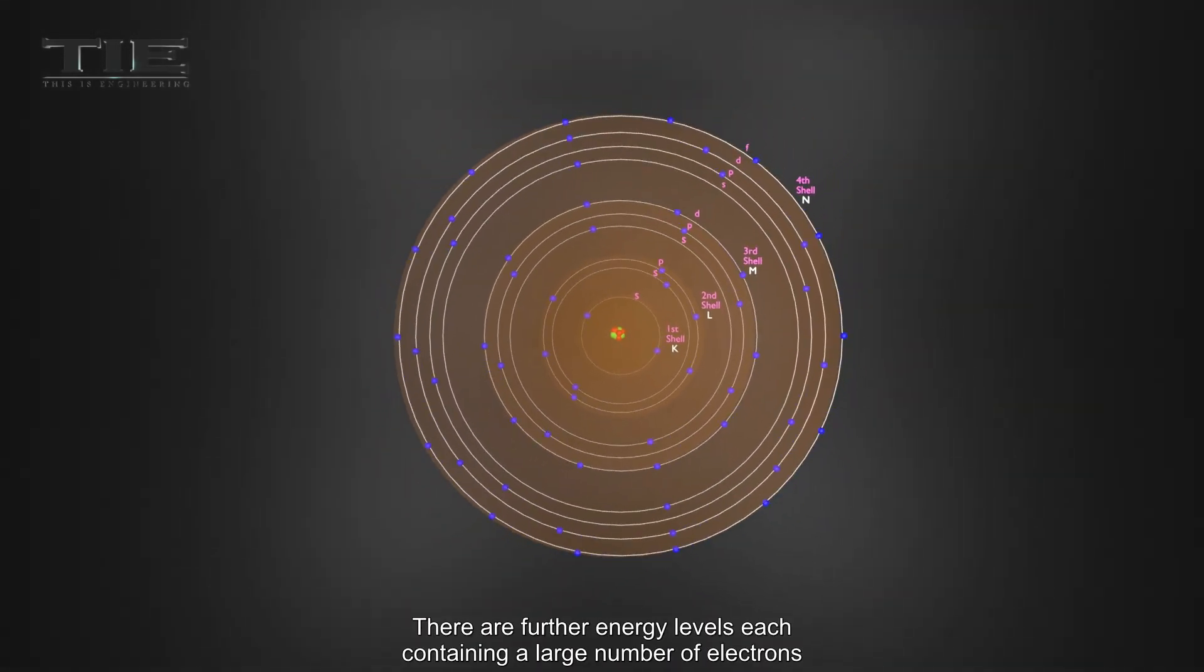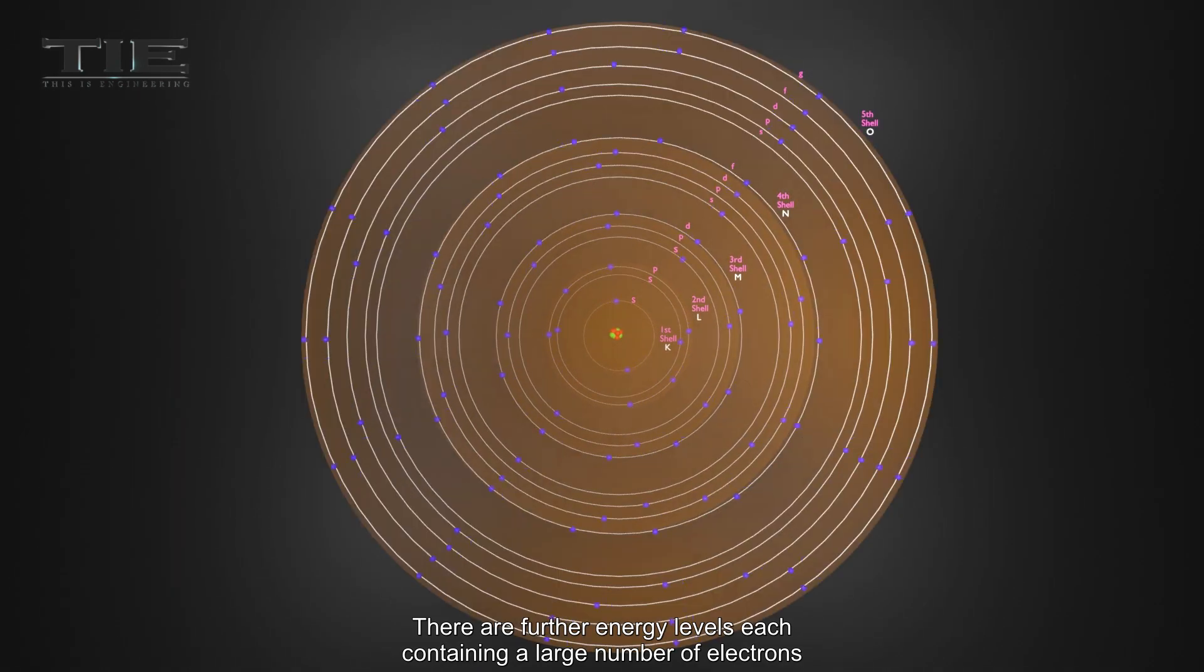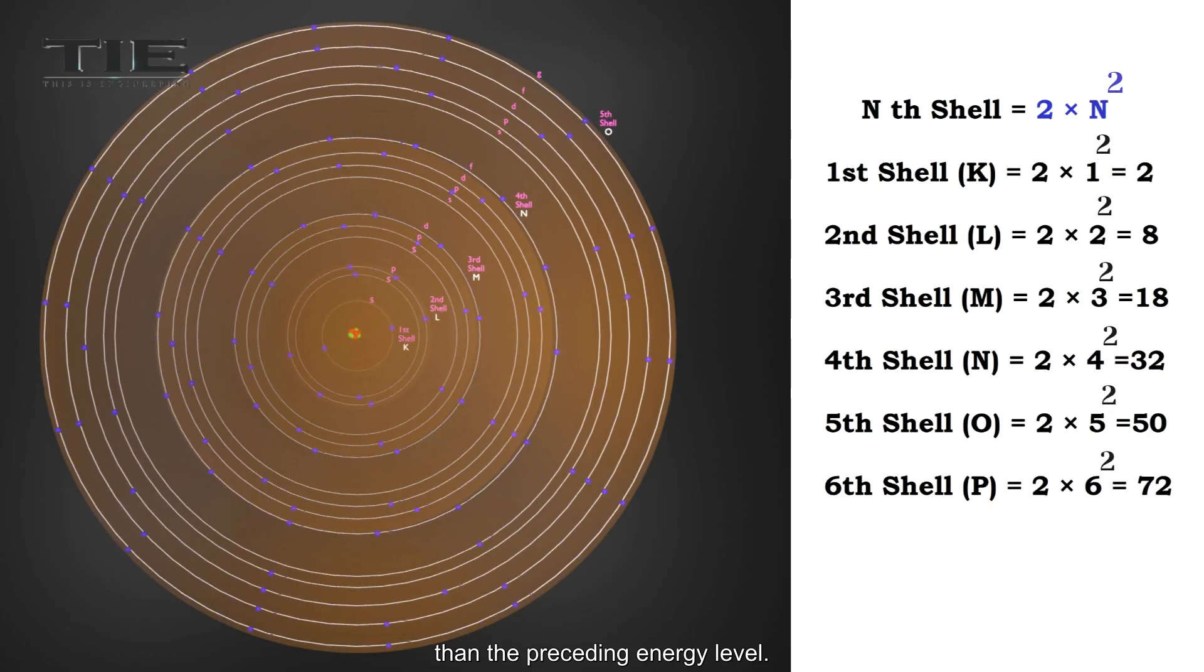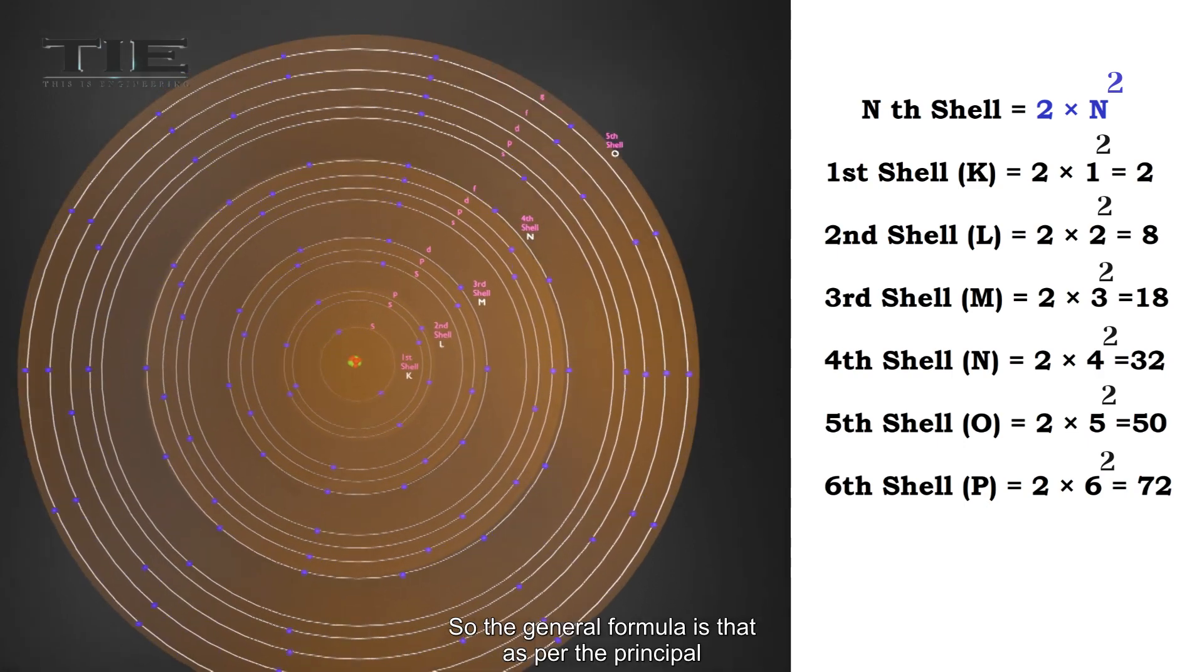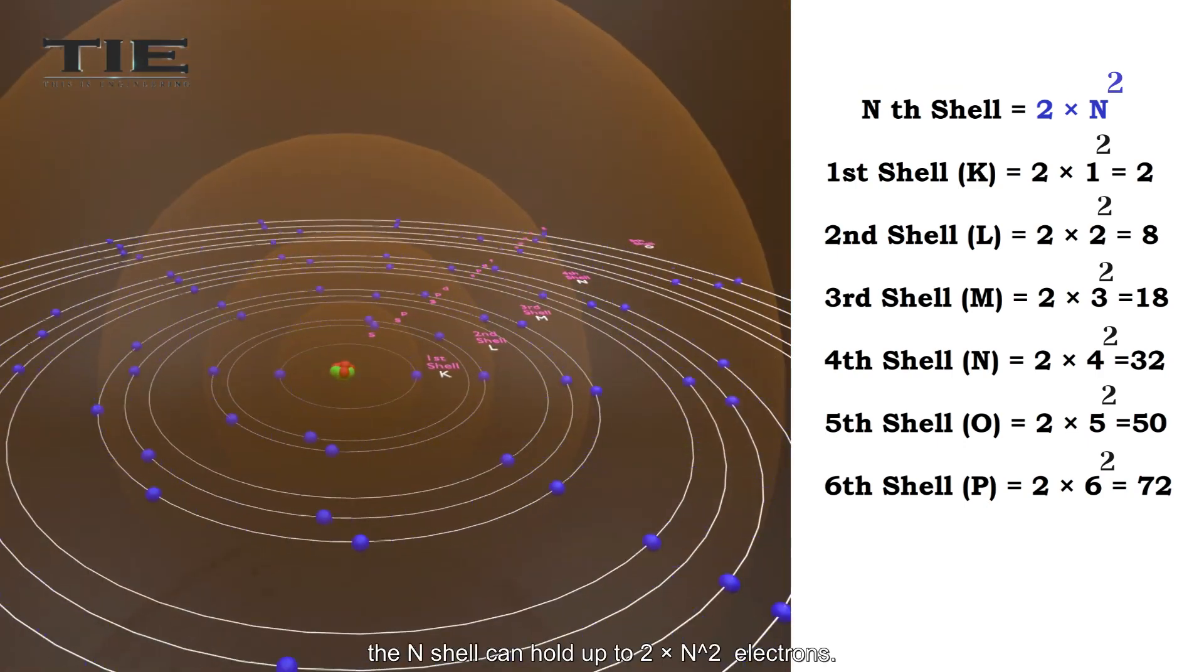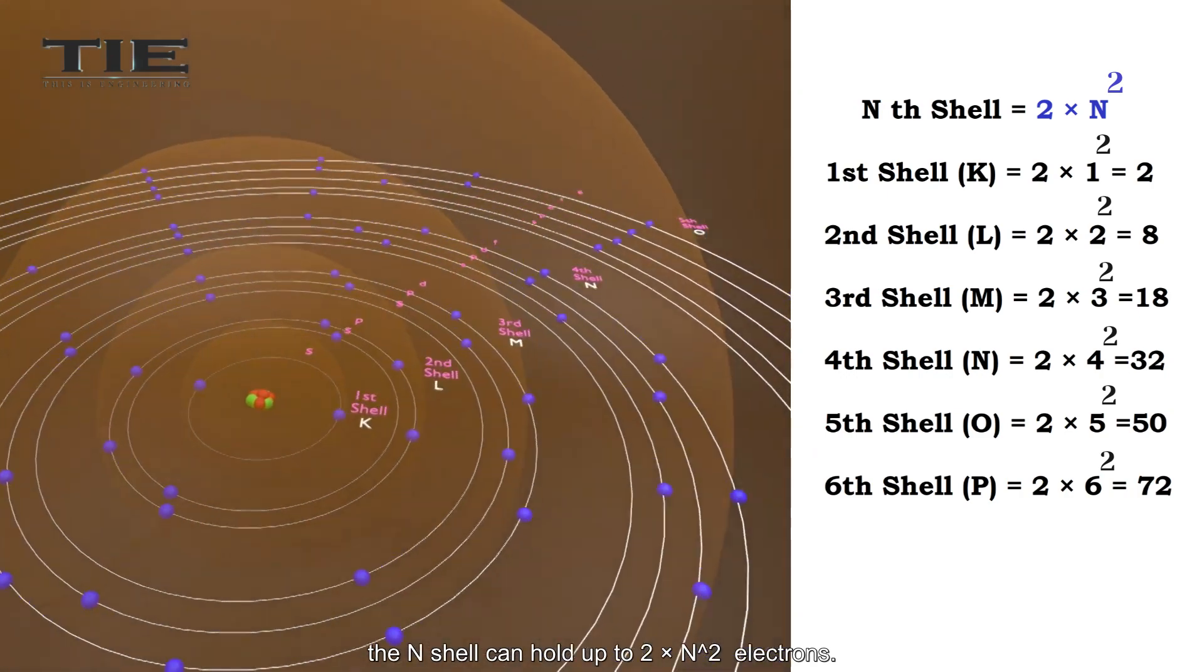There are further energy levels, each containing a larger number of electrons than the preceding energy level. So the general formula is that, as per the principle, the Nth shell can hold up to 2 times N to the power of 2 electrons.